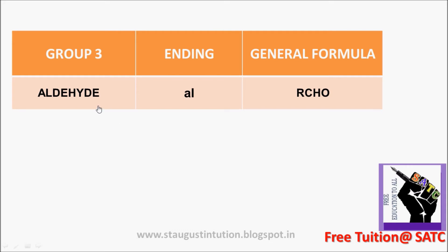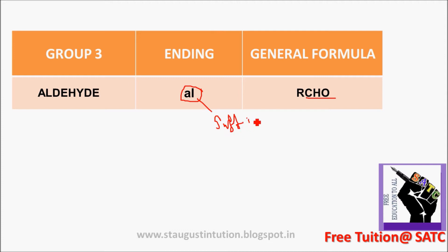This is called aldehyde. Aldehyde is called CHO. That is why we are going to study the suffix as well. The suffix is AL.